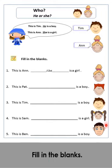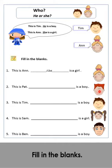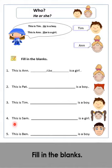Fill in the blanks — he or she? This is An. An is a girl, so we put: She is a girl. Number two: This is Pet. Pet is a boy, so we put: He is a boy. Number three: This is Teen. Teen is a boy, so we put: He is a boy. Number four: This is Sam. Sam is a girl, so we put: She is a girl. Number five: This is Ben. Ben is a boy, so we put: He is a boy.